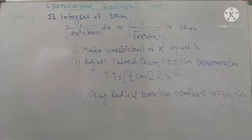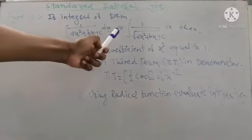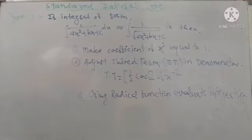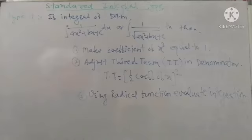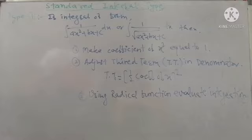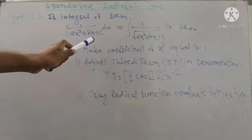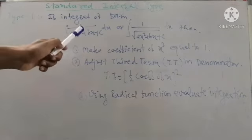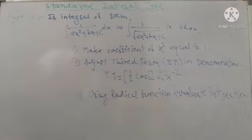A standard Type 1 integral is of the form: integration of 1 upon (ax² + bx + c) dx, or integration of 1 upon root of (ax² + bx + c) dx. In this integral, the numerator is 1 and the denominator is a quadratic polynomial. If the term of x is given in the quadratic polynomial in the denominator, such an integral is called a Type 1 integral.